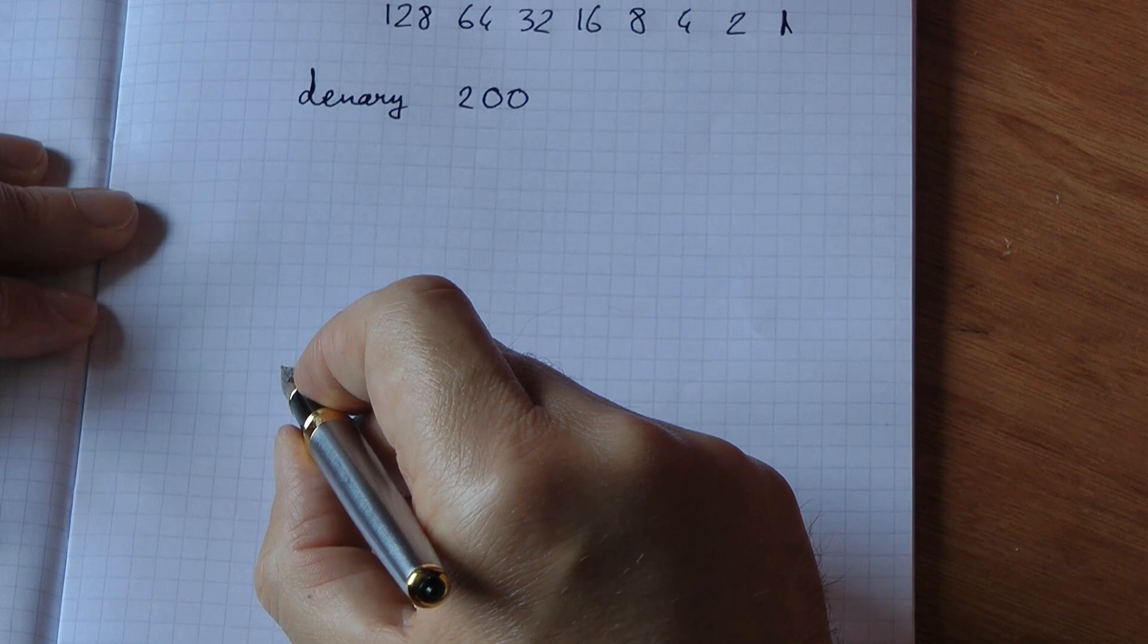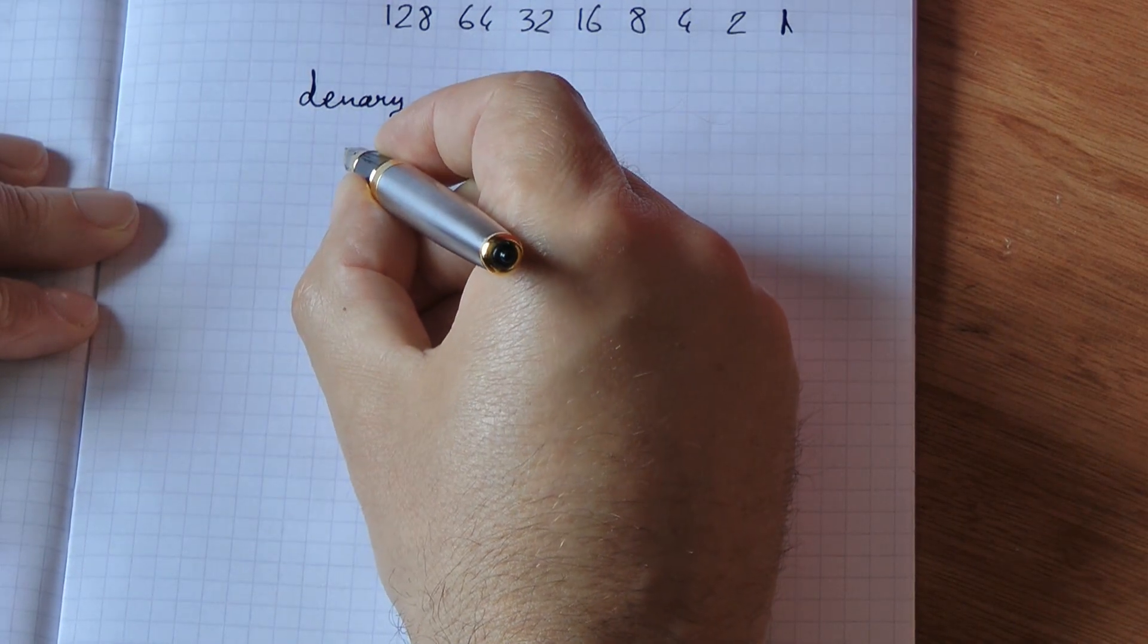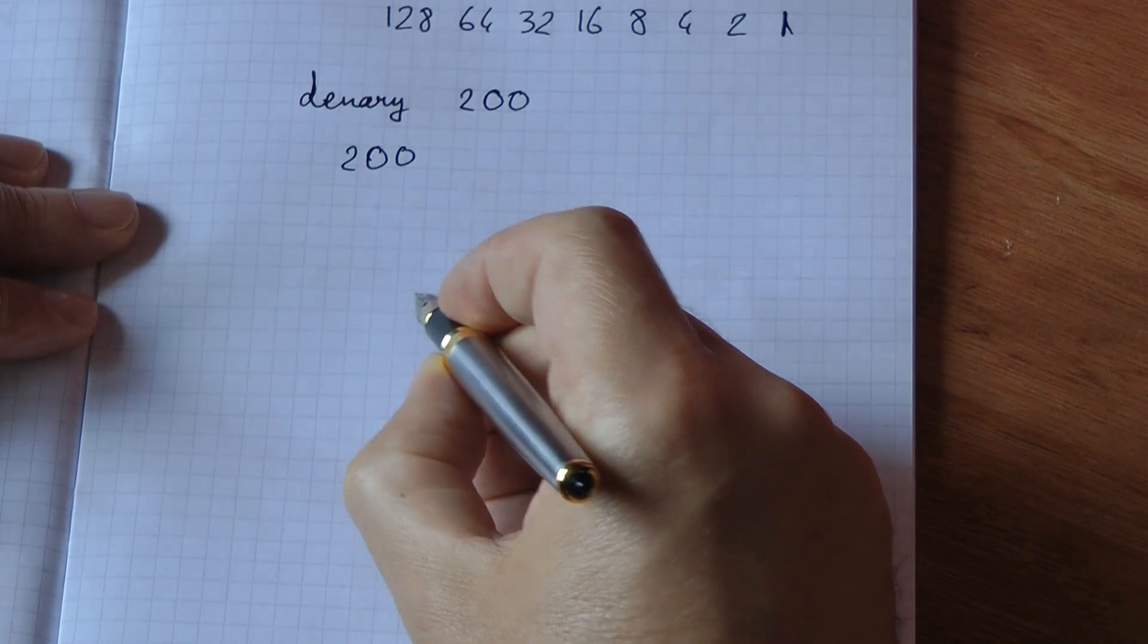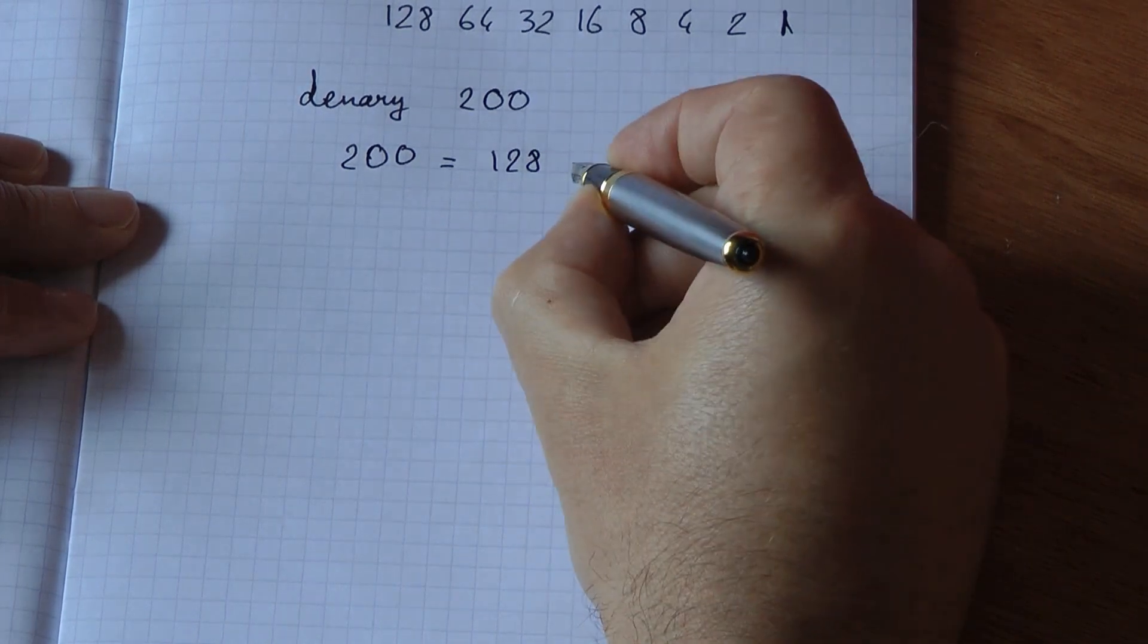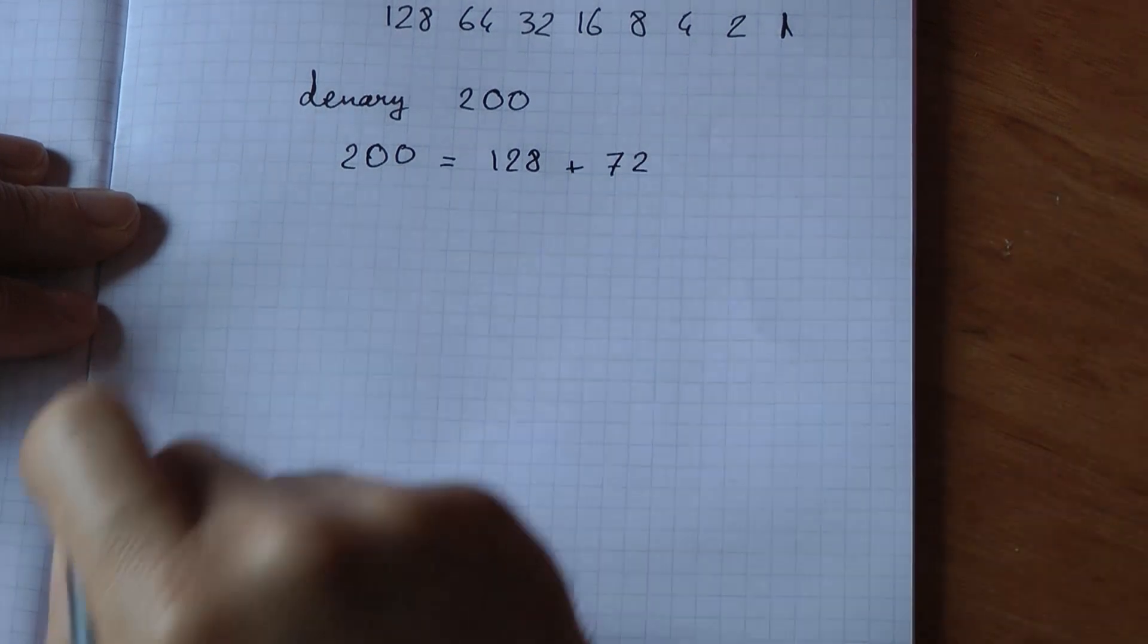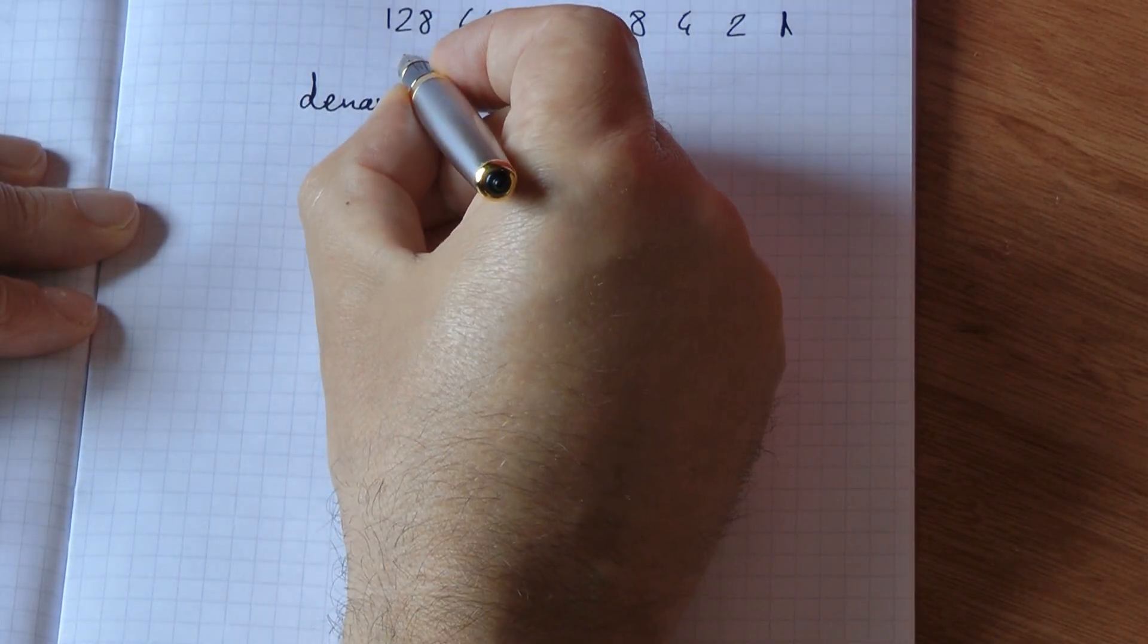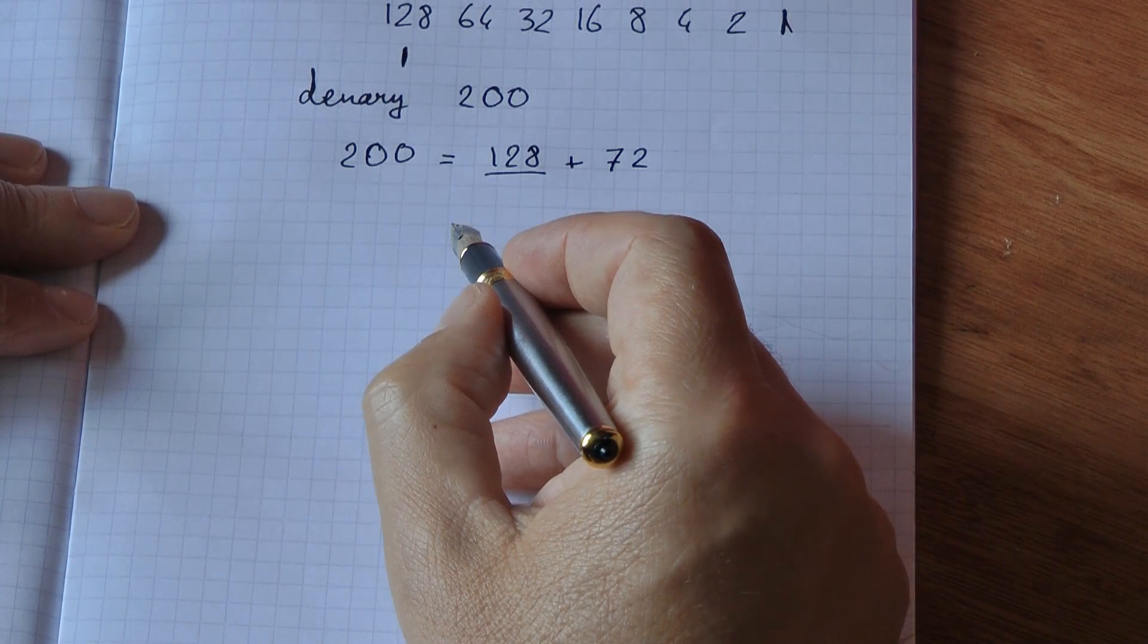Now what is this as a binary number? What I'm going to do is check if I can fit 128 in 200. 200 equals 128 plus 72. Because I've got this 128 value here to make up 200, I'm going to set the column for 128 to 1.